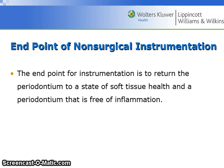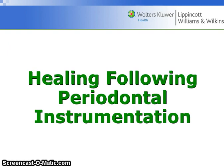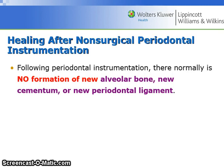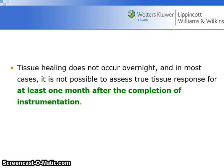The endpoint of non-surgical instrumentation is to return the periodontium to a state of soft tissue health and a periodontium that is free of inflammation. Following periodontal instrumentation, there normally is no formation of new alveolar bone, new cementum, or new periodontal ligament. Tissue healing does not occur overnight, and in most cases it is not possible to assess true tissue response for at least one month after the completion of instrumentation.